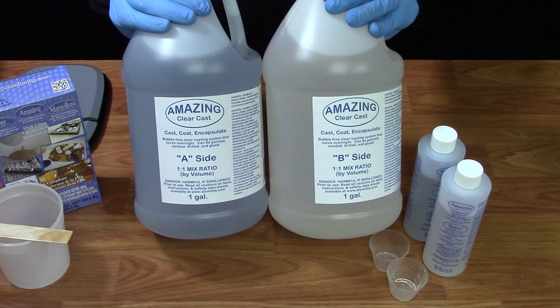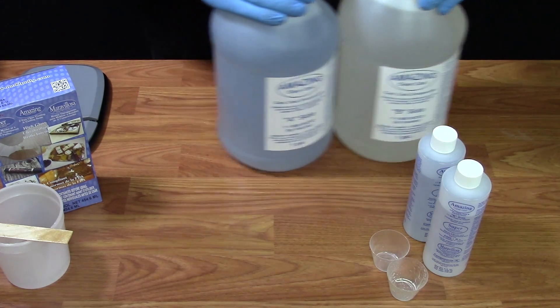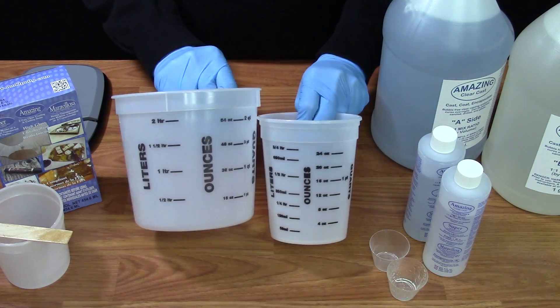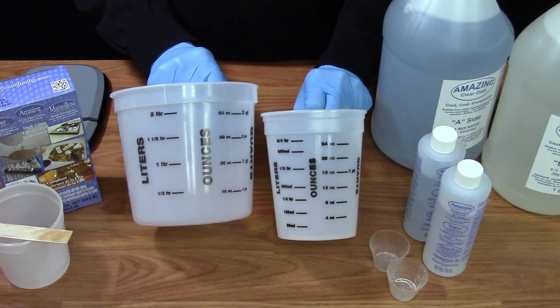If you're mixing larger volumes of Amazing ClearCast, it's a good idea not to mix any more than a half gallon to a gallon at one time and utilize larger mixing containers and measuring containers that can be found on the Alumilite website under tools and equipment.